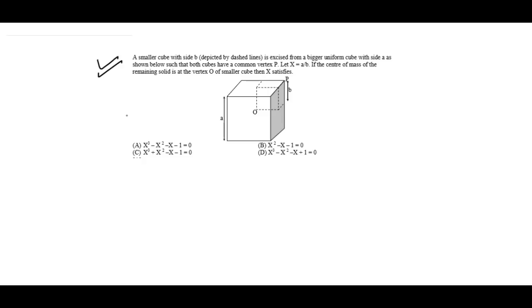First we will see the problem. There is a smaller cube inside a whole cube. We have x equals a by b as the ratio. It's given that the center of the remaining solid is at the vertex O. Then x satisfies certain conditions.